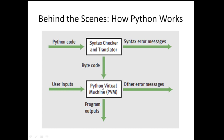The Python Virtual Machine is another software component in Python. It takes any required input from the user, and if there are no errors, the program gives the output. If there are runtime errors, those errors will be displayed and you must correct them. So: write the code, it is checked for syntax, translated into bytecode, given to the Python Virtual Machine, which takes inputs and produces the output.